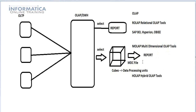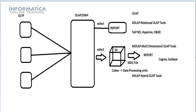Cubes hold data in a 3D format, whereas a table contains data in the form of rows and columns — a 2D format. Fetching data from the cube is fast and highly beneficial for the end user. For example, Cognos is a multidimensional OLAP tool, and S-Base is another multidimensional OLAP tool.